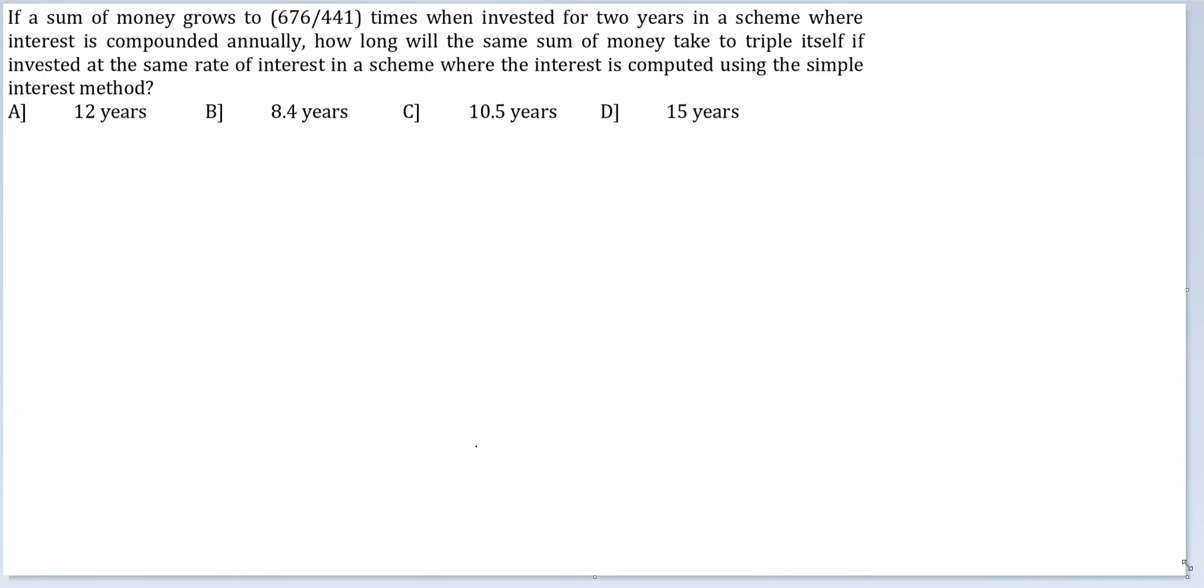Let's look at this question. If a sum of money grows to 676 by 441 times when invested for two years in a scheme where the interest is compounded annually, how long will the same sum of money take to triple itself if invested at the same rate of interest in a scheme where the interest is computed using simple interest method?